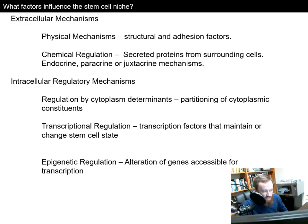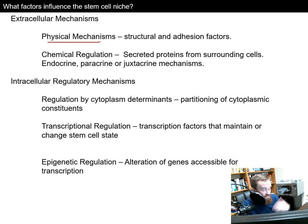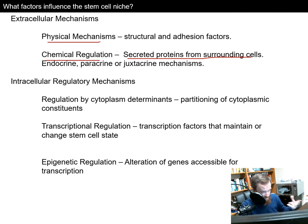What are these components of the environment or stem cell niche that help determine what those blood cells turn into? There are extracellular mechanisms — things outside of the cell. Physical mechanisms such as structural and adhesion factors are things physically on the neighboring cells touching these cells. There's chemical regulation, including signaling proteins that surround the cell via endocrine, paracrine, or juxtacrine mechanisms. The difference between these is the distance they travel — juxtacrine is similar to adhesion factors but involves specialized proteins sending messages to directly touching cells.